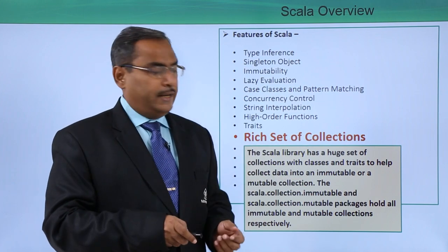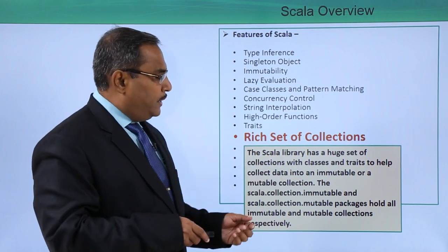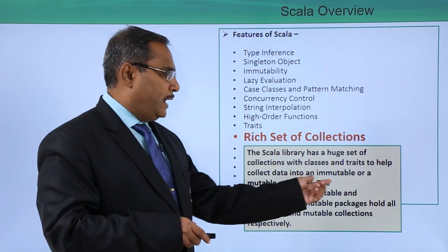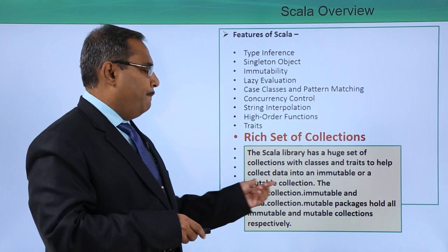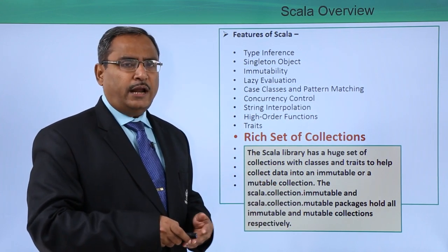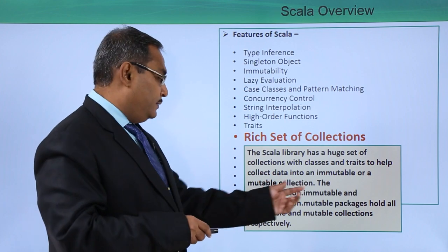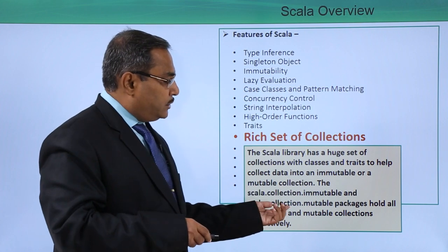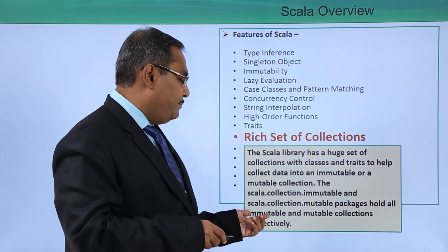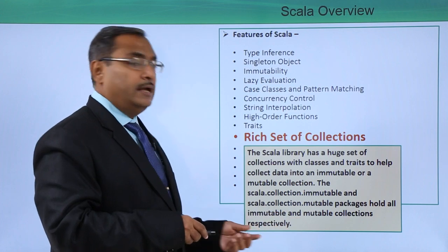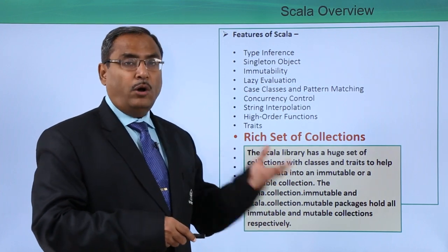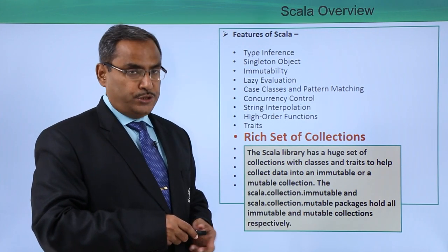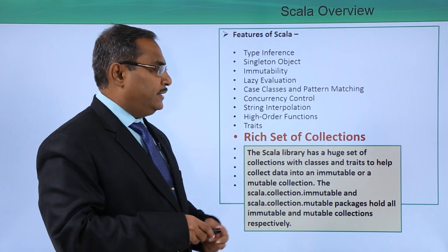The next feature is a rich set of collections. Scala's library has a huge set of collections with classes and traits to collect data into immutable or mutable collections. The 'scala.collection.immutable' and 'scala.collection.mutable' packages hold all the immutable and mutable collections respectively used in Scala code.